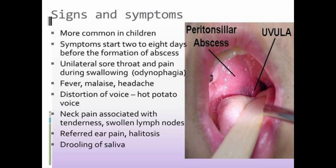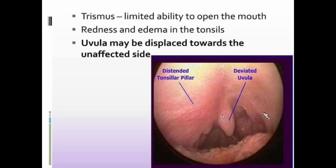The patient may also present with neck pain associated with tenderness and lymphadenopathy. Difficulty swallowing saliva can result in excessive saliva and halitosis. Referred pain to the ear may also be present. Another sign includes trismus, especially if the parapharyngeal spaces are involved, as well as inability to turn the head.